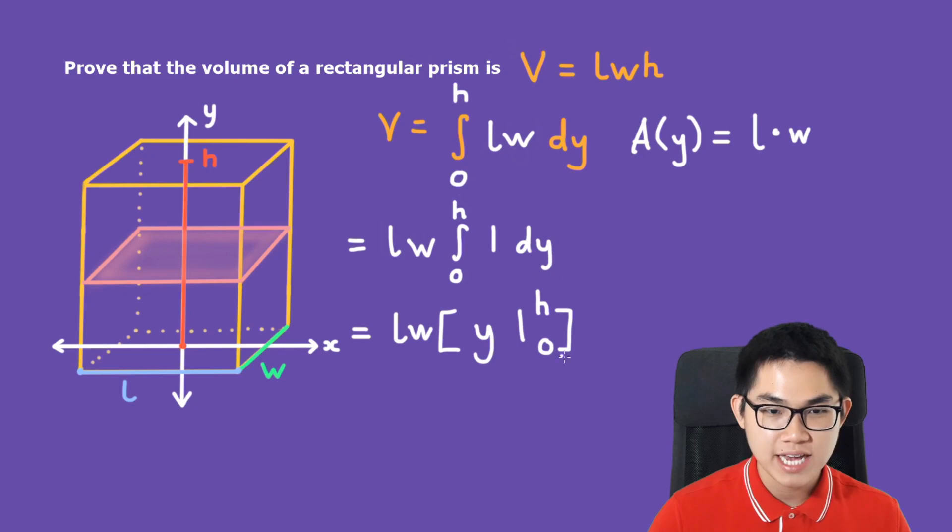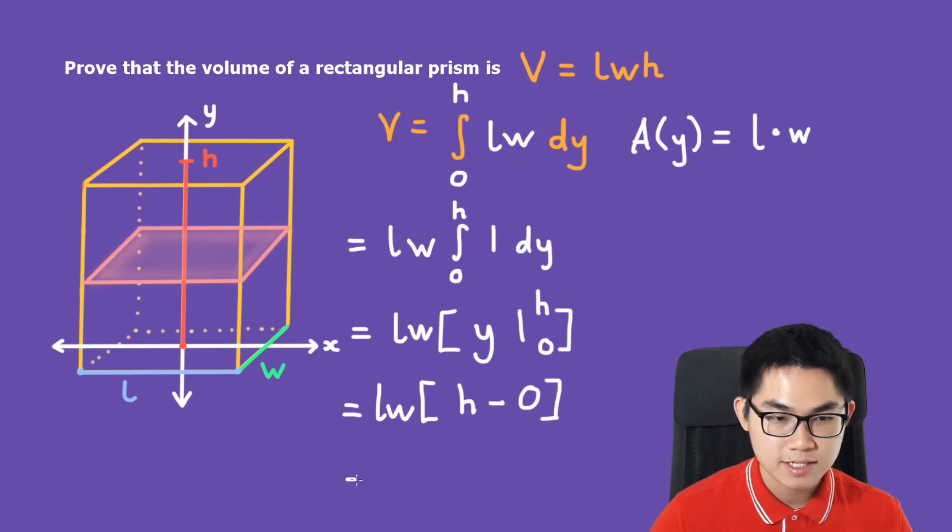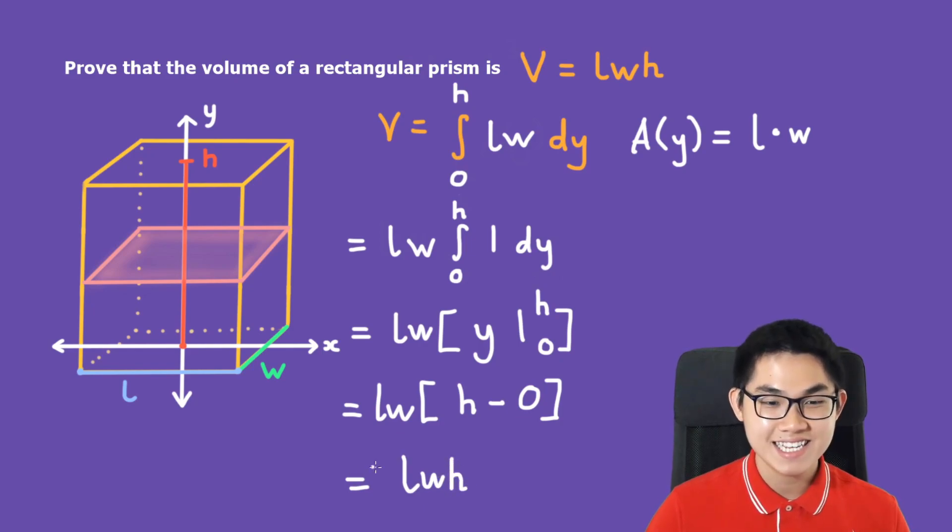Now let's substitute H and 0 into the Y. So we have L times W times H minus 0, and so this will give us L times W times H. And that's it. This is the volume of our rectangular prism.